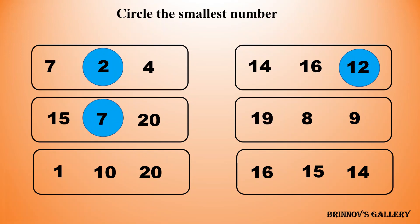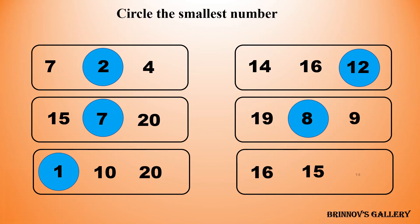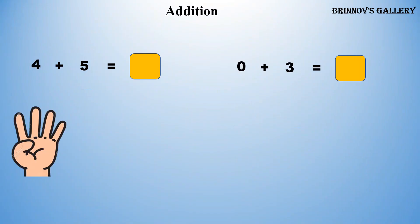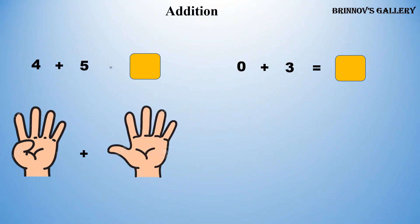19, 8, 9 — 8 is the smallest number amongst all the others. 1, 10, 20 — 1 is the smallest number amongst all the others. 16, 15, 14 — 14 is the smallest number amongst all the others.